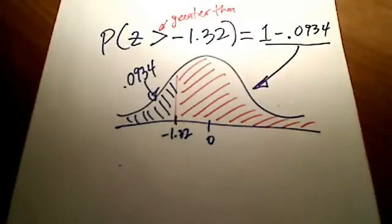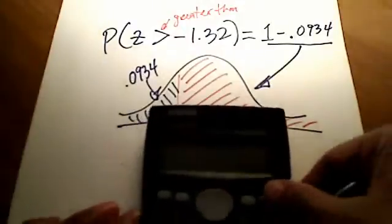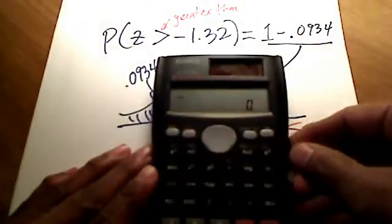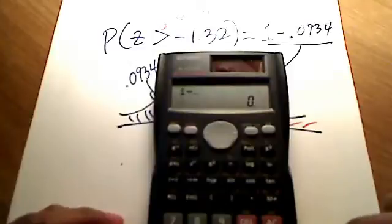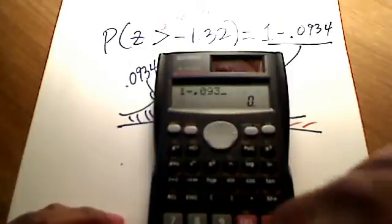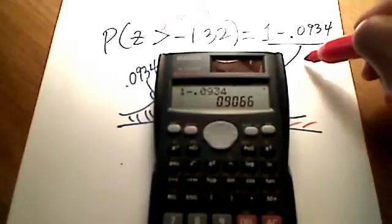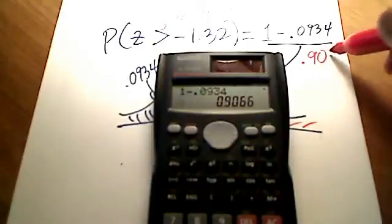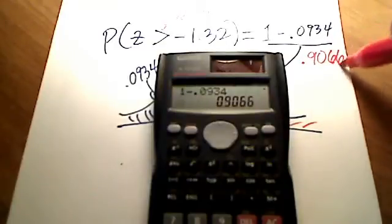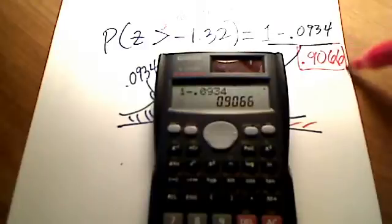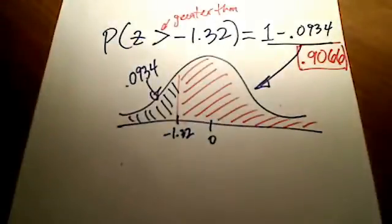I can just do that very easily on my calculator. Doing it mathematically, no problem. Turn this guy on and punch in my 1 minus 0.0934. And you'll see that I've got a value of 0.9066. So this total area over here is 0.9066.